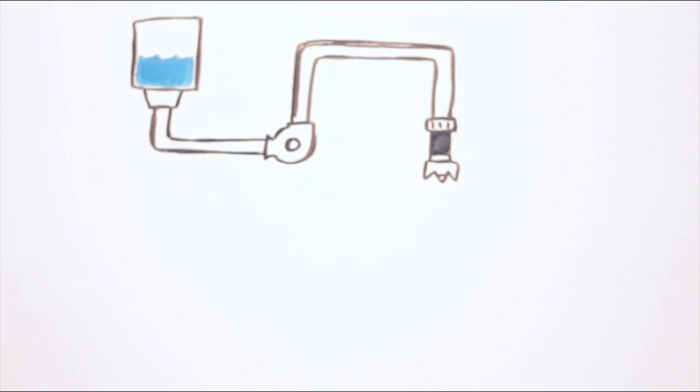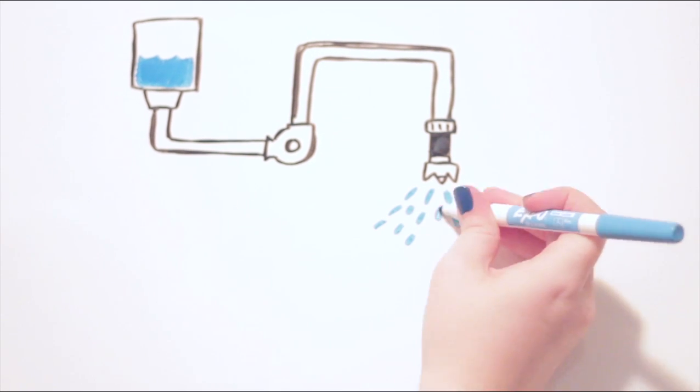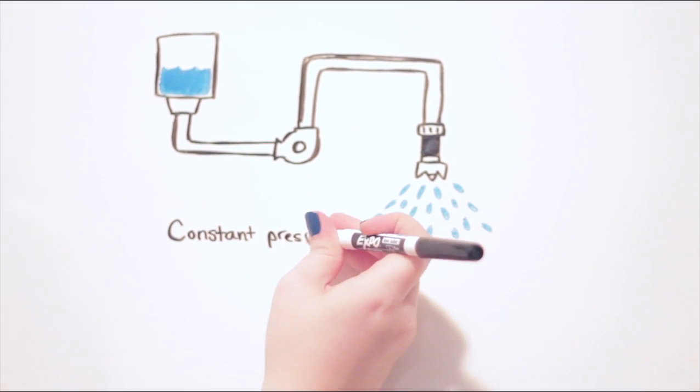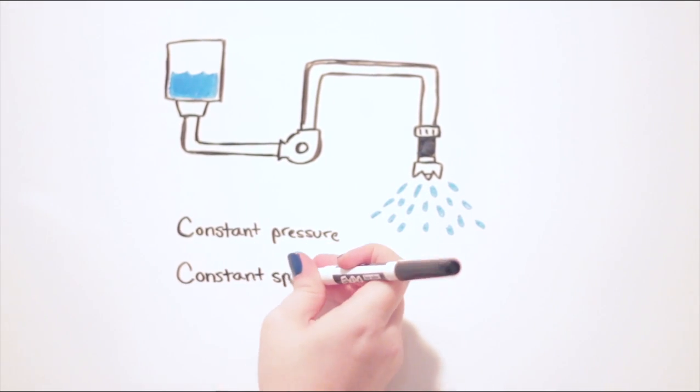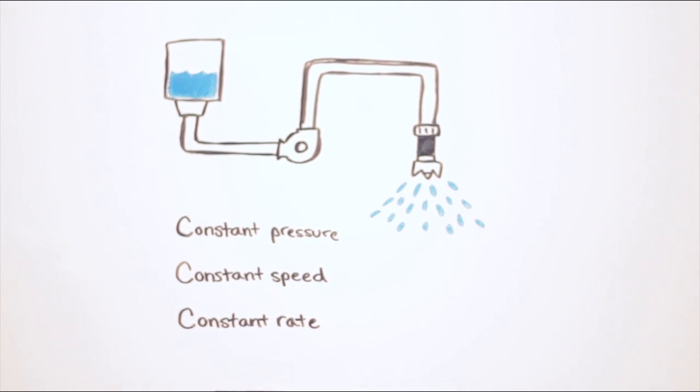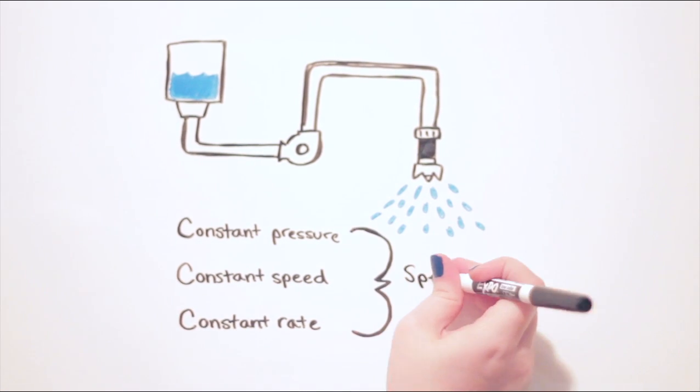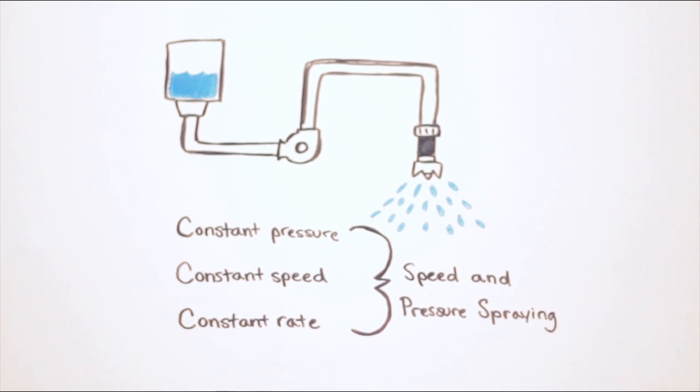Spray systems began as little more than a tank, pump, and a nozzle. The idea of early spray systems was to produce a constant pressure, and if the operator drove at a constant speed, then the chemical would be applied at a constant rate. This is also known as speed and pressure spraying.